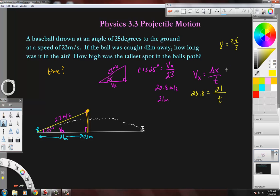To solve this, we're going to take 21 and divide it by 20.8. So that's 21 divided by 20.8, and it comes out to be about 1.01 seconds.